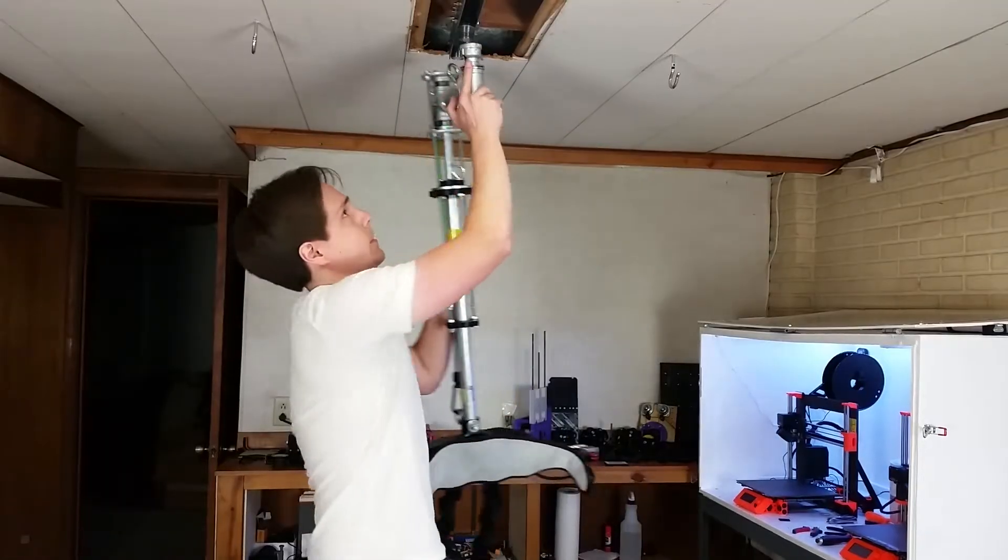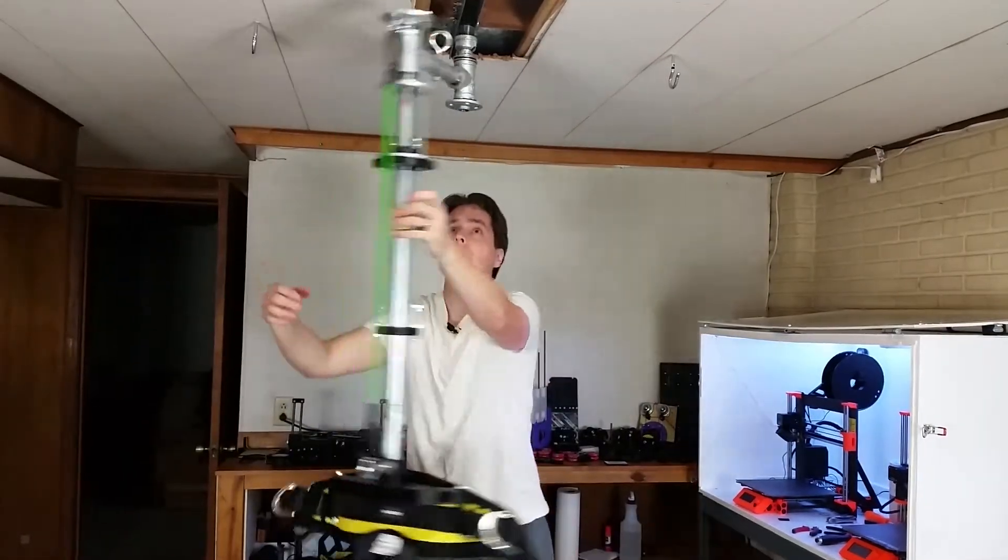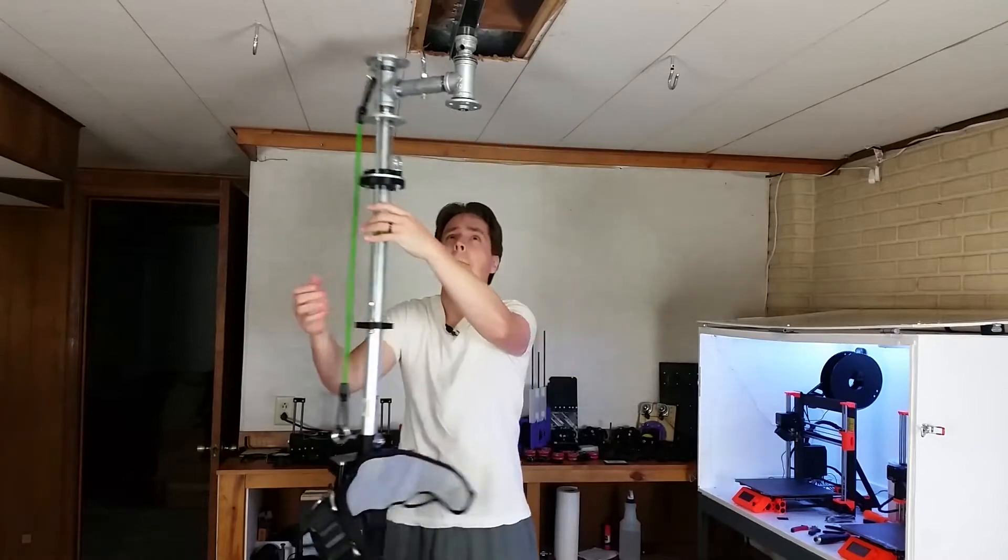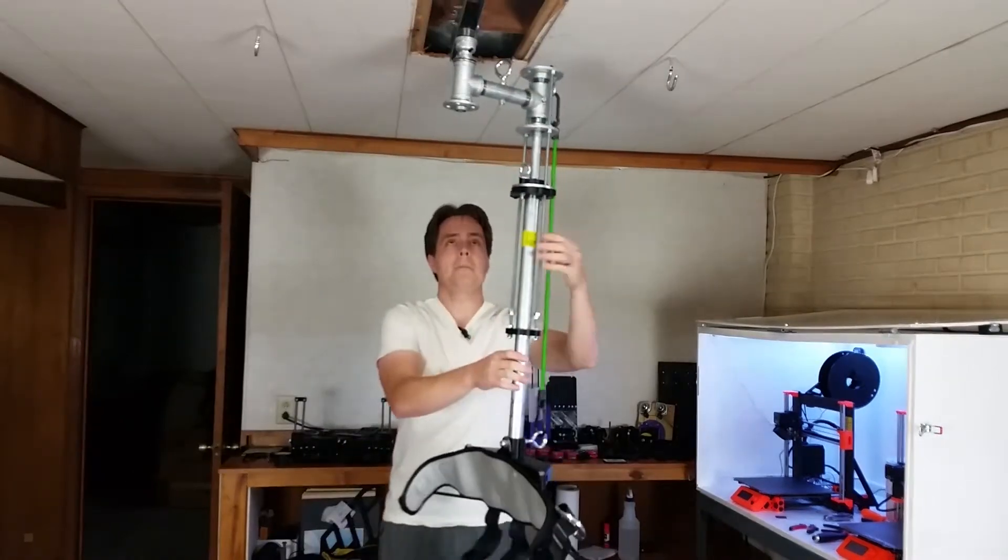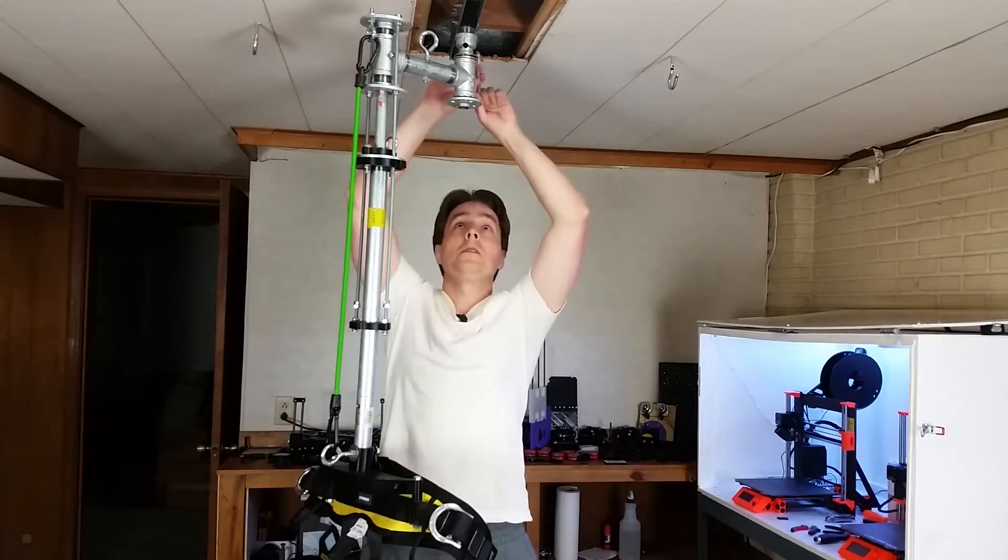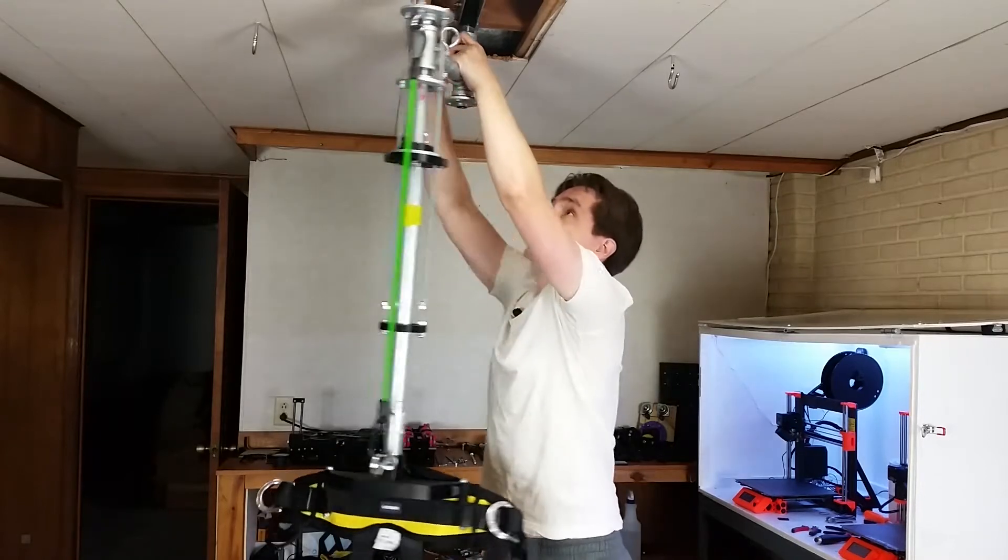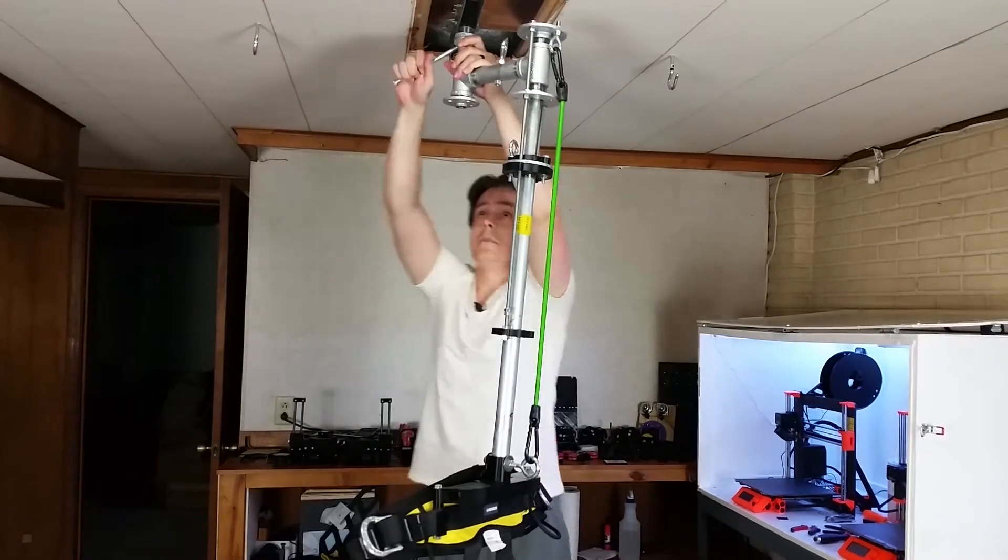The support rig screws into the ceiling brace like so. Just get the threads to line up and turn it a few times. Then I use a long bolt to get some leverage and tighten it. After implementing it this way, I don't really like it because what if someone doesn't tighten it enough. So I'm going to do it differently in the next version.